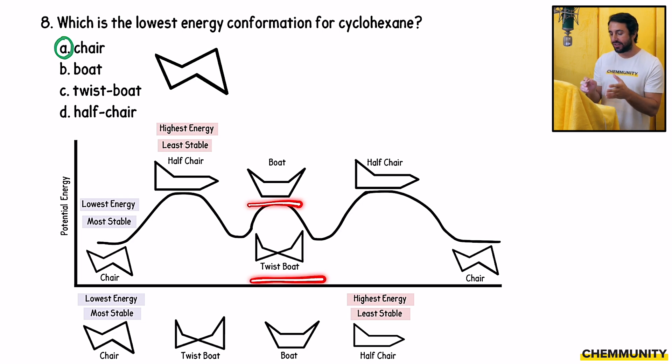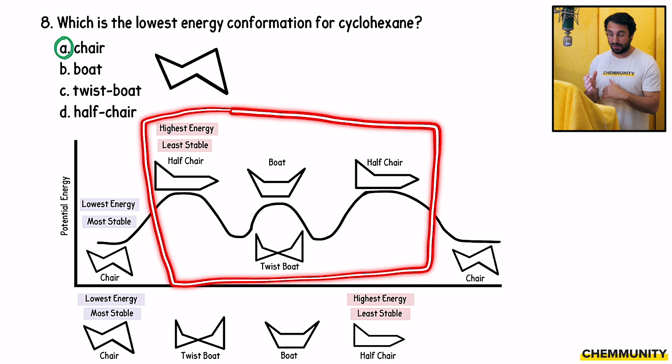When you look at boat, twist boat, half chair, these are all configurations that produce eclipsing interactions or these other destabilizing effects, which is why a chair will pass through these configurations during a chair flip. When we go from one chair to the other chair, it passes through these configurations, but ultimately will get to the other chair because those are the two lowest energy conformations for cyclohexane for these reasons that we just described.